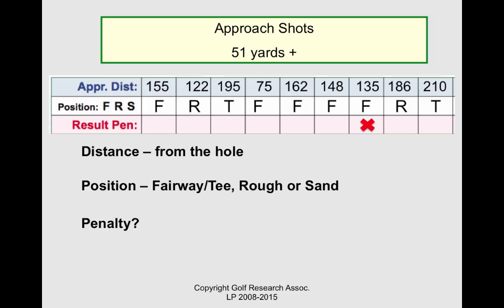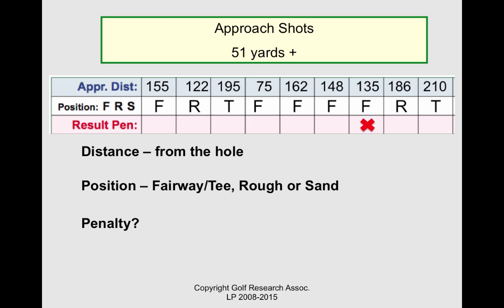You might ask: what if I had a second approach shot? There's no room to record it. Don't worry — the system will know. The strokes gained calculation for that hole starts with the distance and position of the first attempt, and it ends at the start of the next facet, short game or putting. The distance and position from a second approach shot does not matter.